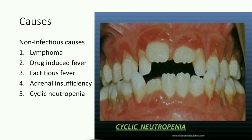What are the causes of relative bradycardia? The causes can be classified into non-infectious and infectious causes. The non-infectious causes include: 1) lymphoma, 2) drug-induced fever, 3) factitious fever, 4) adrenal insufficiency, and 5) cyclic neutropenia. This image shows an individual with cyclic neutropenia who has developed acute necrotizing gingivitis.